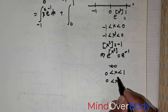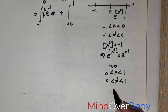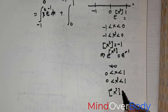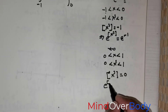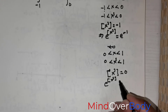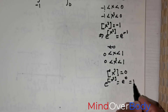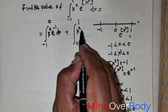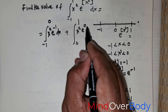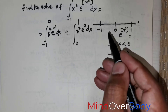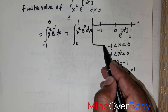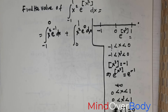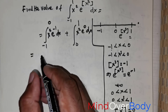Since x is between 0 and 1, x cubed will also be between 0 and 1, and the greatest integer of x cubed will equal 0. This means e raised to the power of the greatest integer of x cubed is e raised to the power of 0, which equals 1. So the integrand on this interval is x squared times 1, dx.